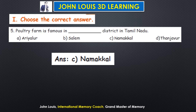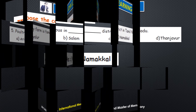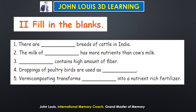Now fill in the blanks. Question: poultry farm is famous in dash district in Tamil Nadu. Next: there are dash breeds of cattle in India — the answer is 26 breeds of cattle in India. The milk of dash has more nutrients than cow's milk.